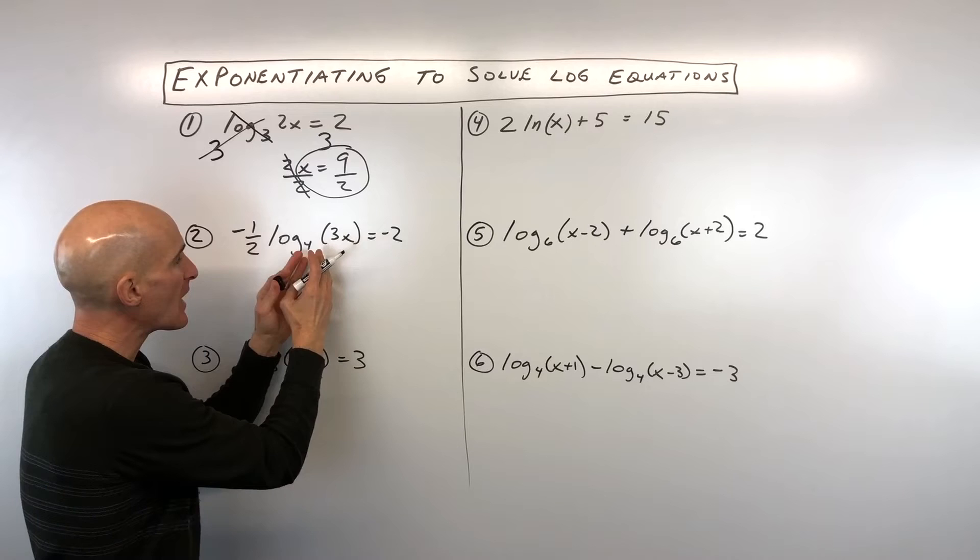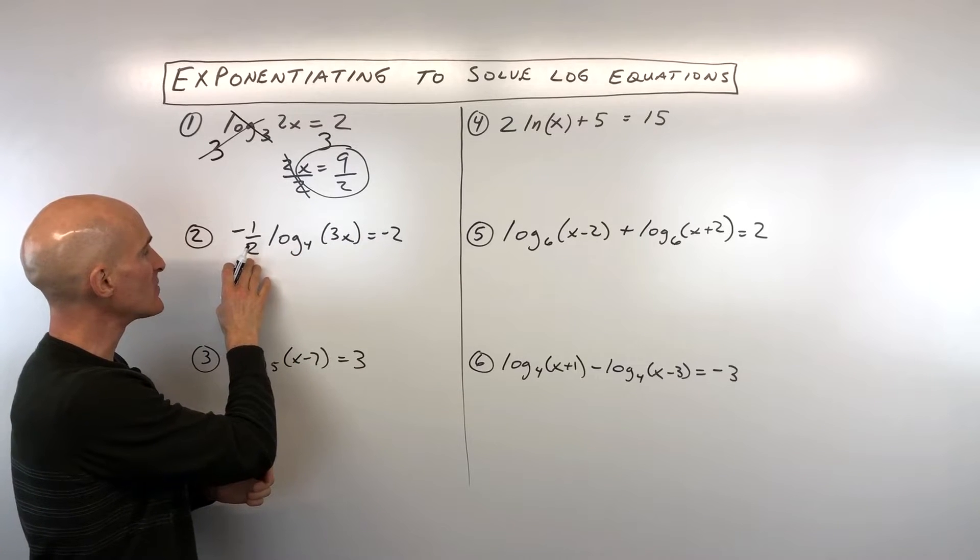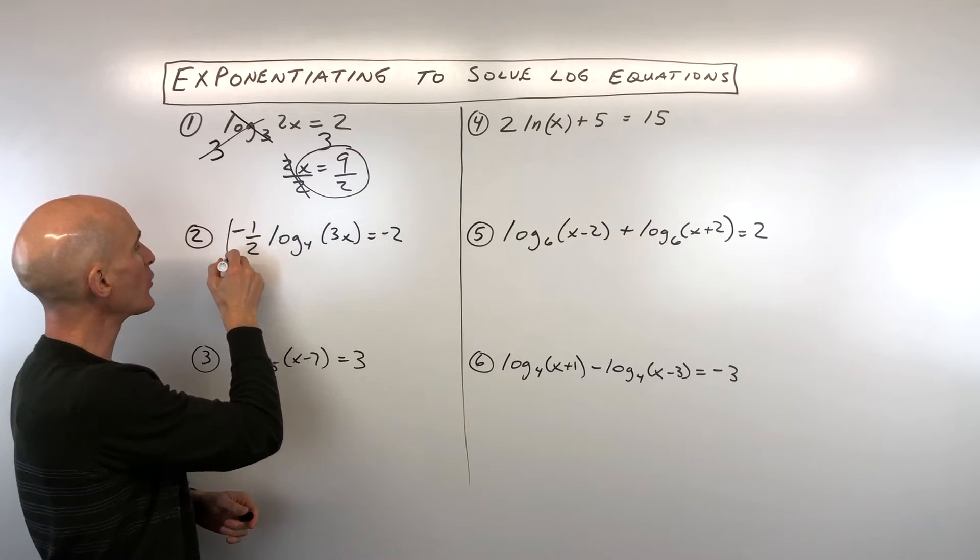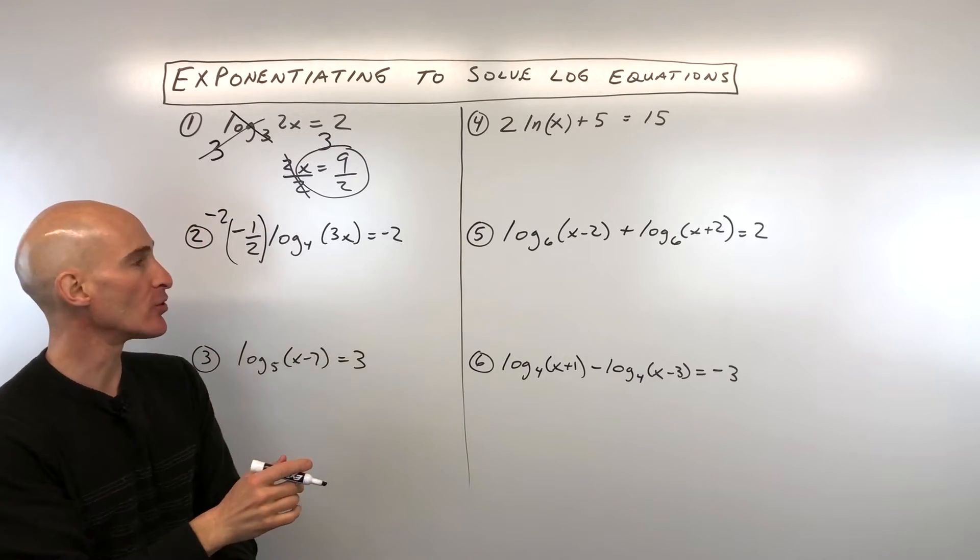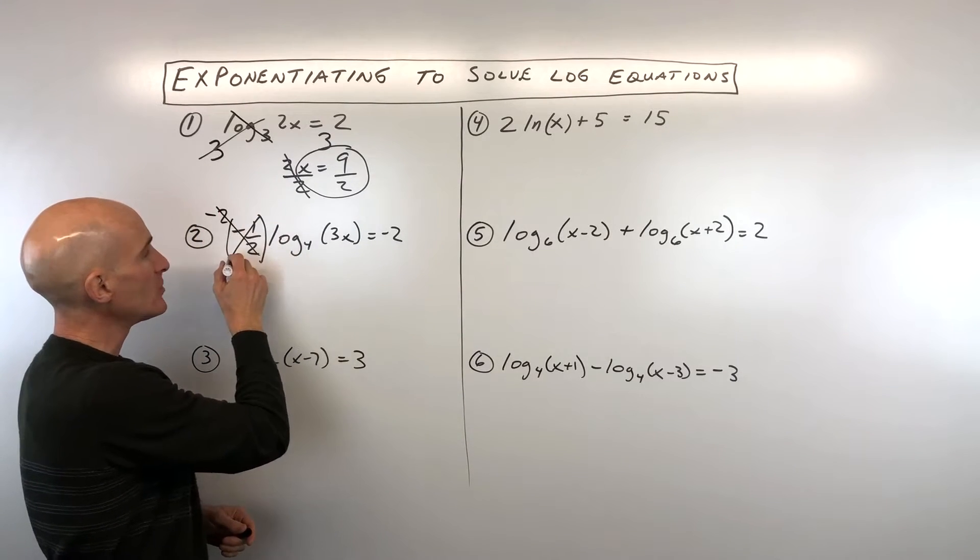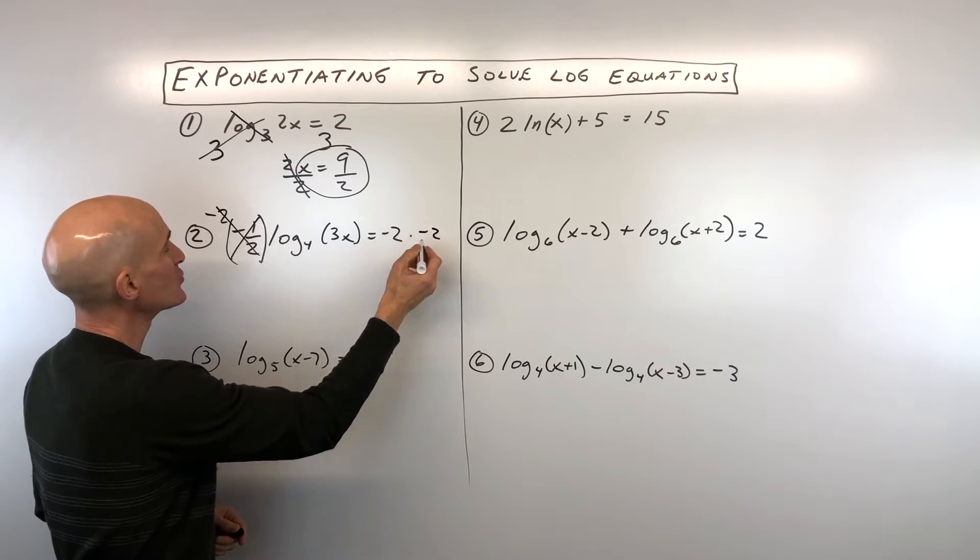Here we're going to try to get the logarithm by itself. So again, kind of working from the outside in. I want to get rid of this negative 1 half. So what I'm going to do is I'm going to multiply both sides by negative 2. That's the reciprocal. These are going to cancel. So if I do that to the left, I want to also do it to the right.